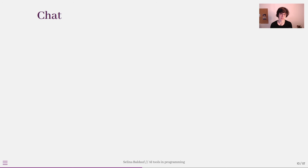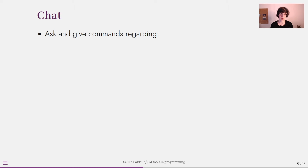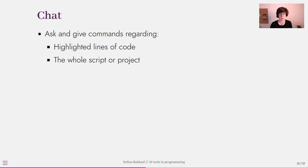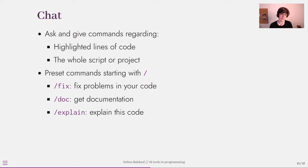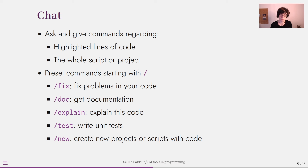Let's talk about another very useful feature: the GitHub Copilot chat. This feature is not available in RStudio but if you're using a fully supported IDE like Visual Studio Code you will have it available. You can use this chat to ask questions about your code and give commands to GitHub Copilot — about highlighted lines, your entire script, or even your entire project. GitHub Copilot has some preset commands that all start with a slash: slash fix for problems, slash doc for documentation, slash explain to explain code, slash test to write unit tests, and slash new to create new projects.